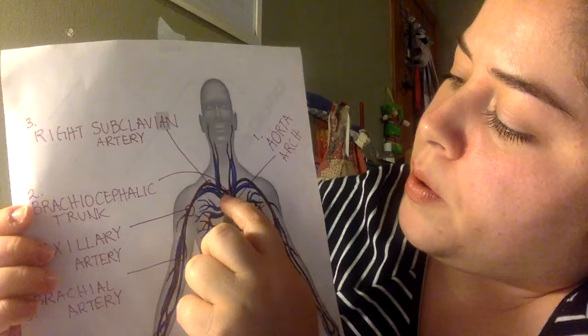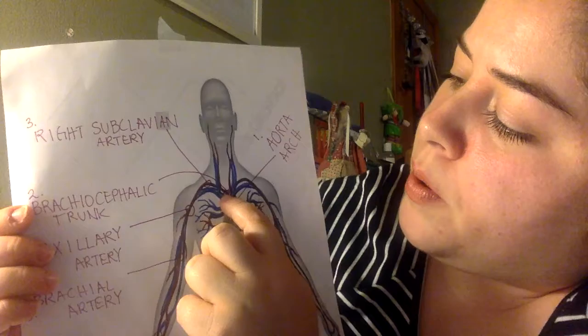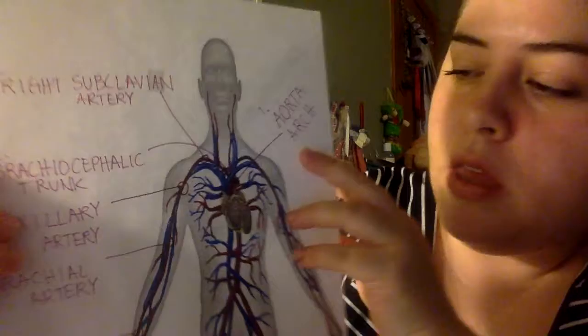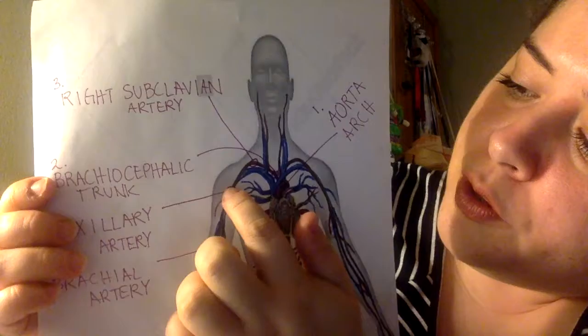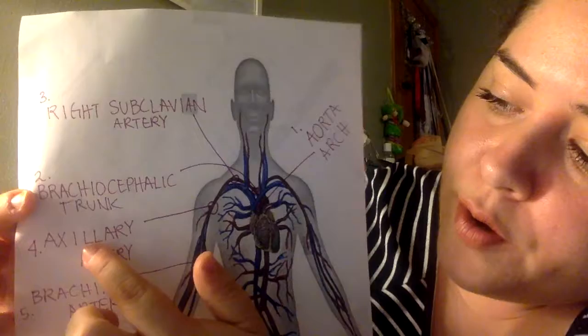As that moves along up, we have the brachiocephalic trunk, and as that moves further along below the clavicle we have the right subclavian artery, and then as that moves further down in the axilla we have the axillary artery, which is basically the armpit.